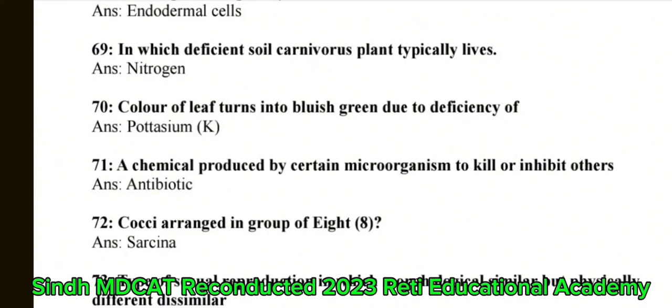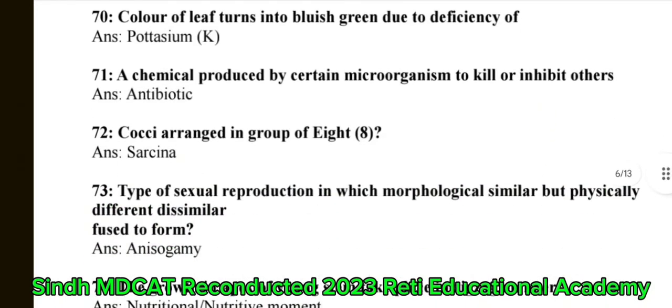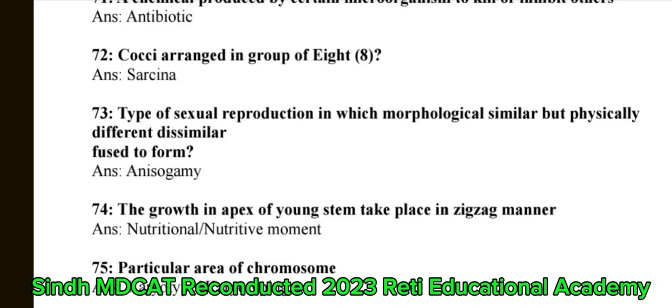Question 70: Color of leaf turns bluish green due to deficiency of potassium. Question 71: A chemical produced by certain microorganisms to kill or inhibit others is called an antibiotic. Question 72: Cocci arranged in a group of eight — the correct answer is sarcina. Question 73: Type of sexual reproduction in which morphologically similar but physiologically dissimilar gametes fuse — the correct answer is anisogamy. Question 74: Growth at the apex of a young stem in a zigzag manner — the correct answer is nutation movement.